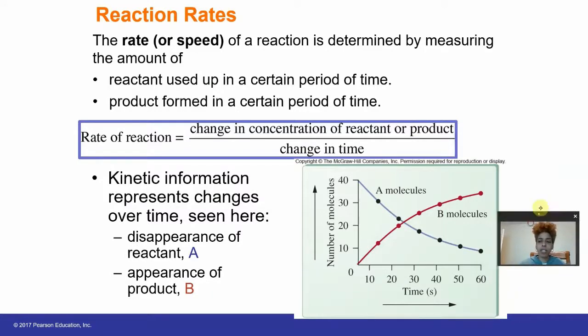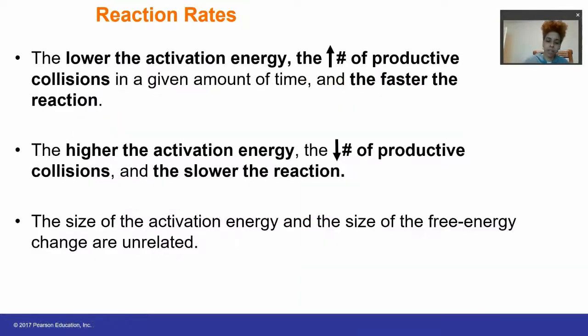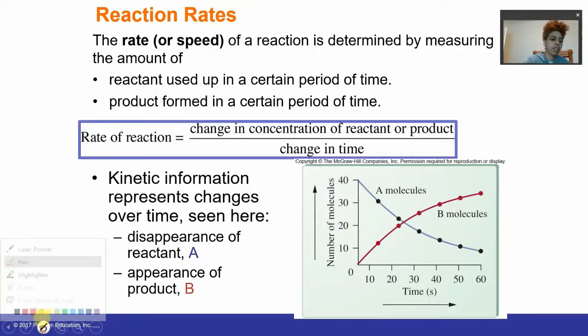So what is the actual rate of the reaction? The rate is measured by determining the amount of reactant that's used up over a period of time, or you can take a look at the amount of product formed over a certain period of time. So it's the change in concentration of the reactant and product per change in time.